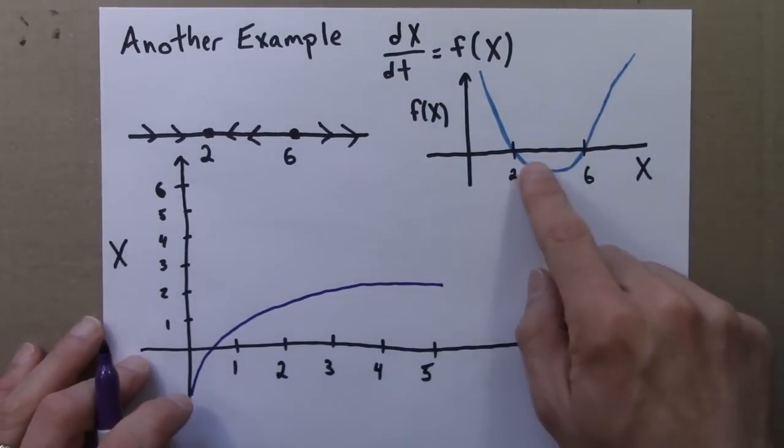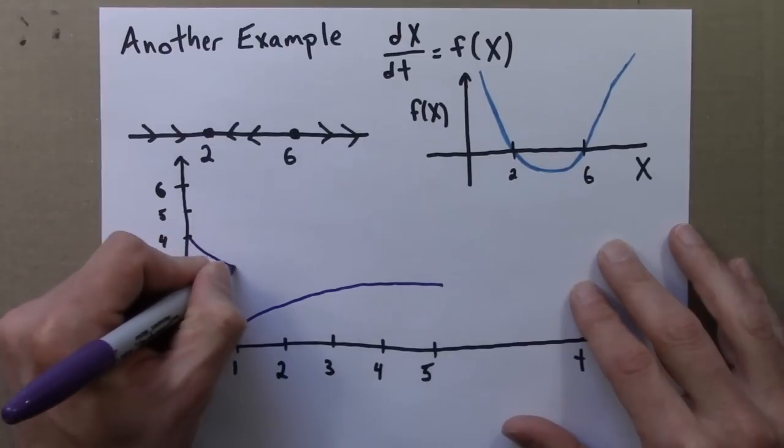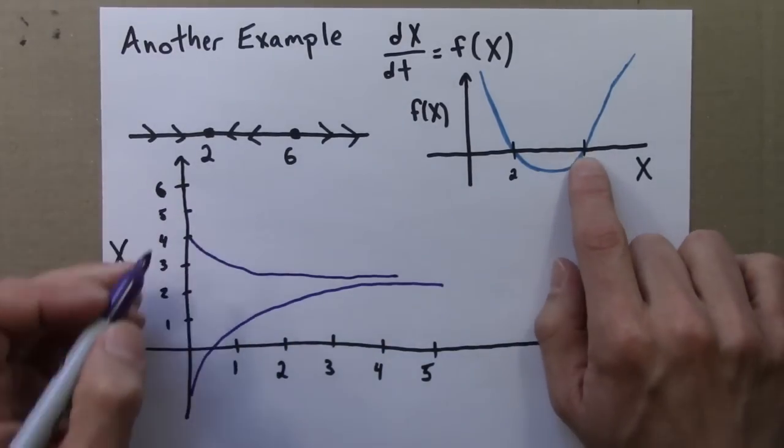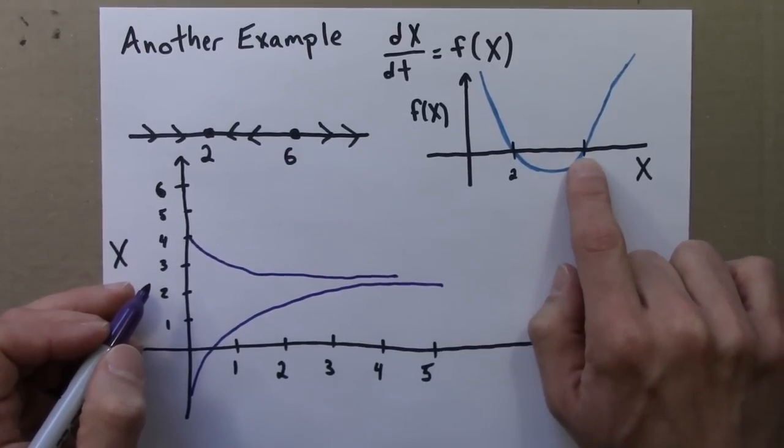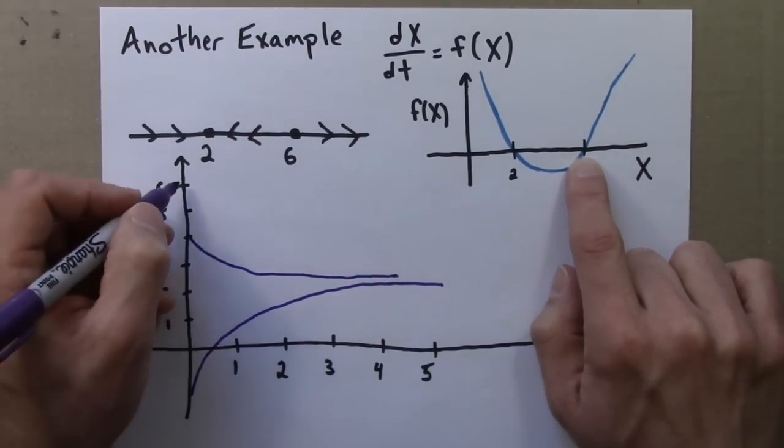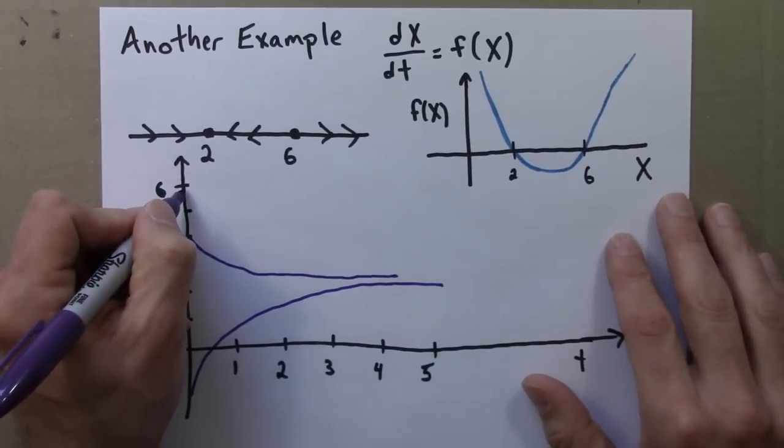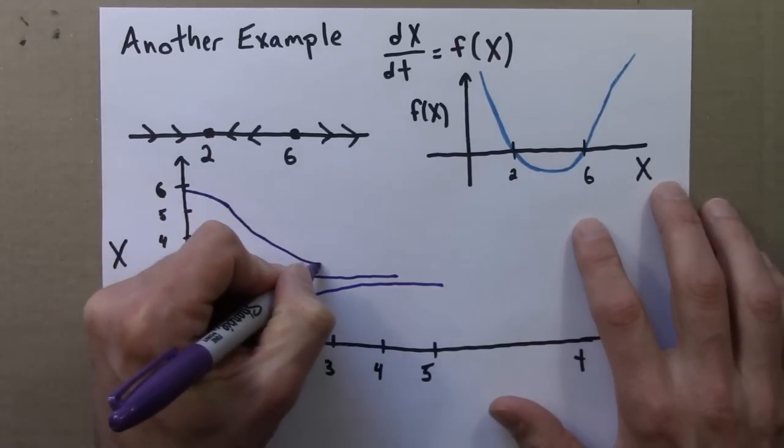If I'm somewhere between 2 and 6, I decrease until I hit 2. Let's say I start just a little bit below 6. Six is an equilibrium point, an unstable point. If I'm a little bit below 6, my derivative is negative. That means I'll be decreasing at first slowly, then more rapidly, then slowly again.